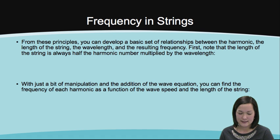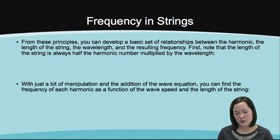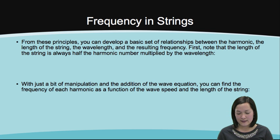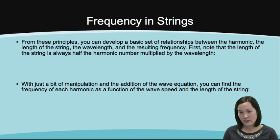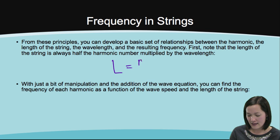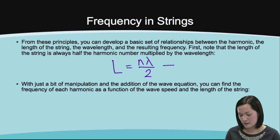To find the frequency in strings, from these principles you develop a basic set of relationships between the harmonic, the length of the string, the wavelength, and the resulting frequency. Note that the length of the string is always half the harmonic number multiplied by the wavelength, or L is equal to n times lambda divided by 2. Or lambda is equal to 2L over n.